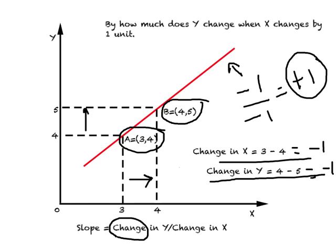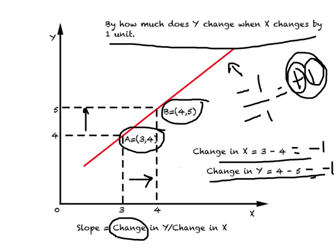When you get a positive sign associated with the slope, it reflects a positive relationship. The number one means that when we increase the value of X by one unit, Y changes by one unit. If in some other example you had a slope value of negative five, it would mean: when you increase X by one unit, Y falls by five units.